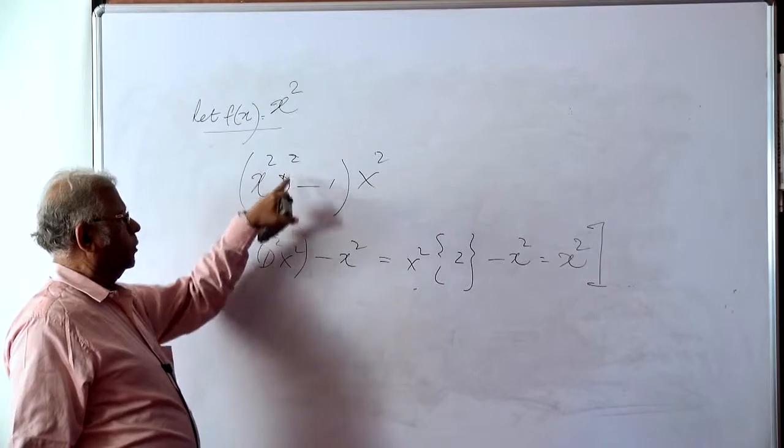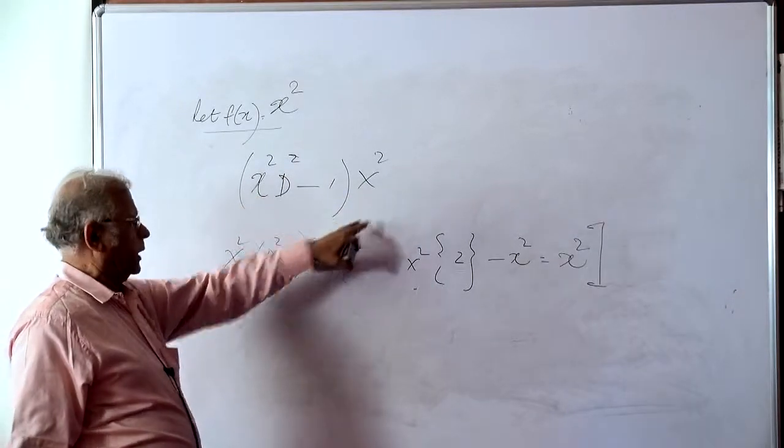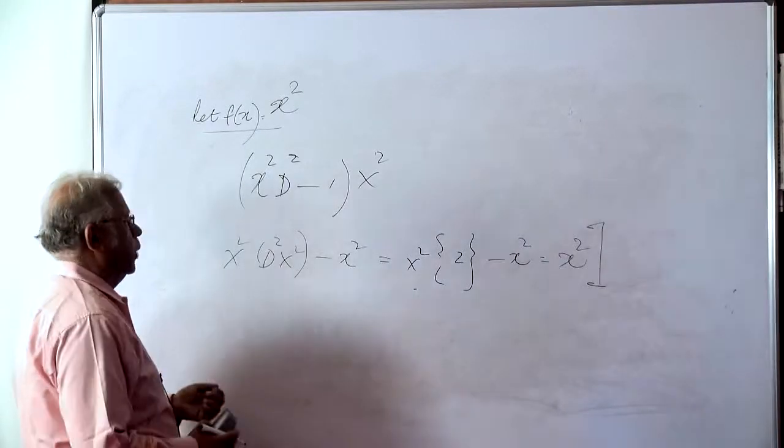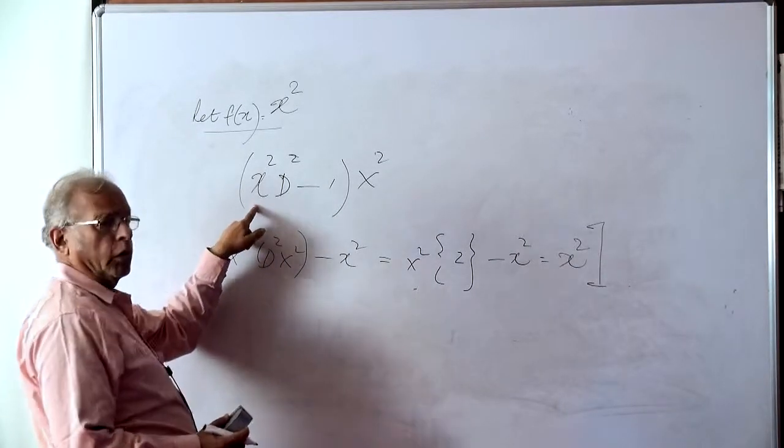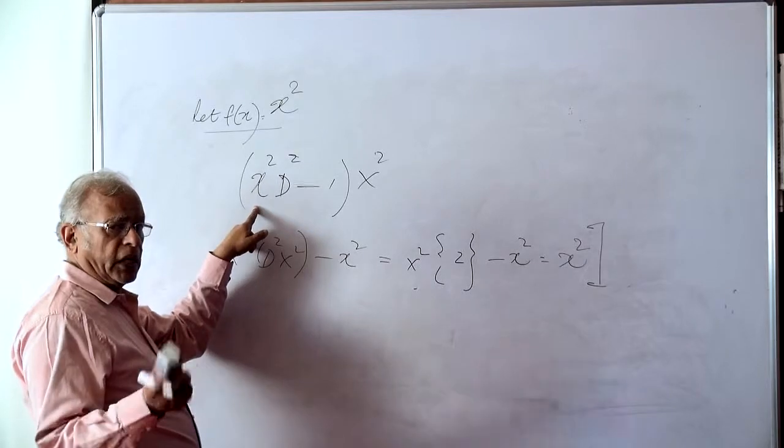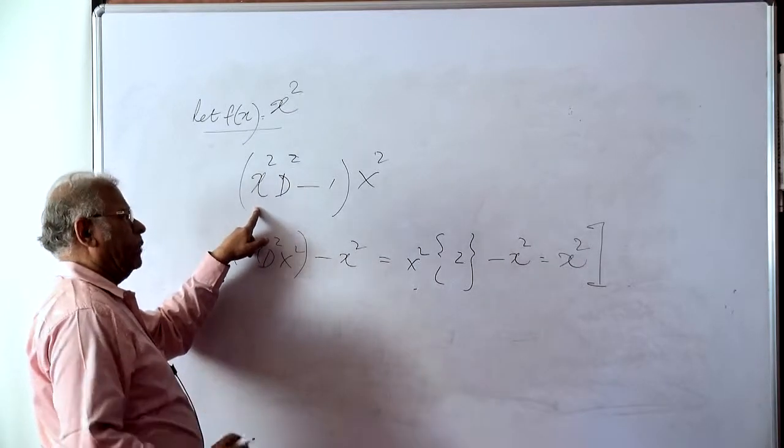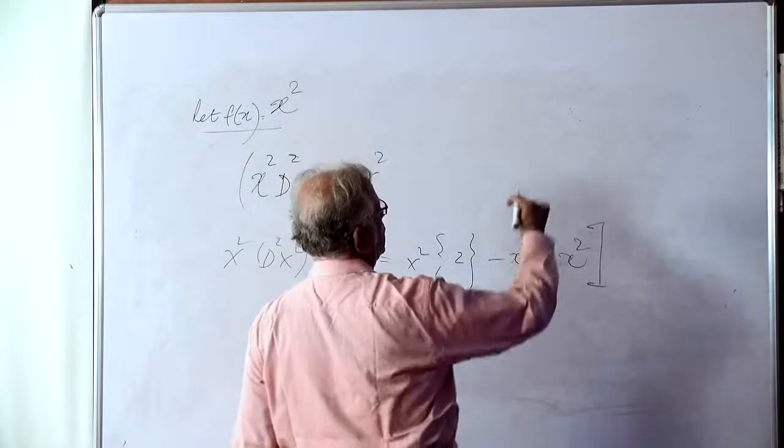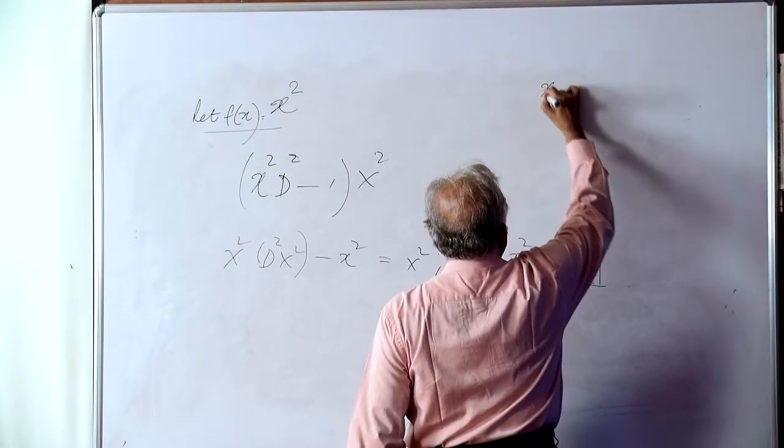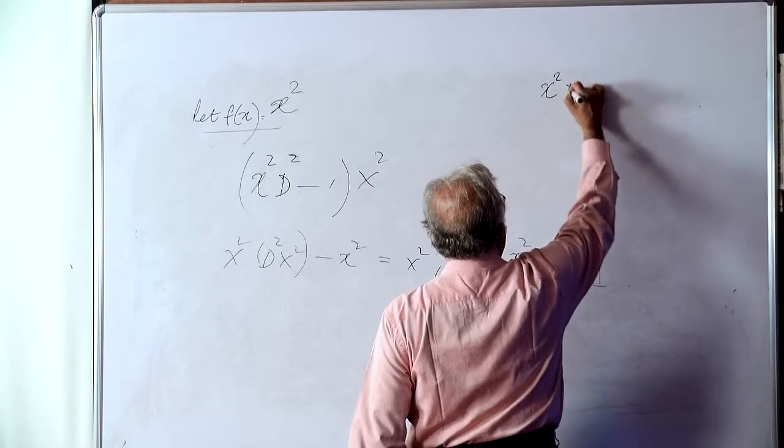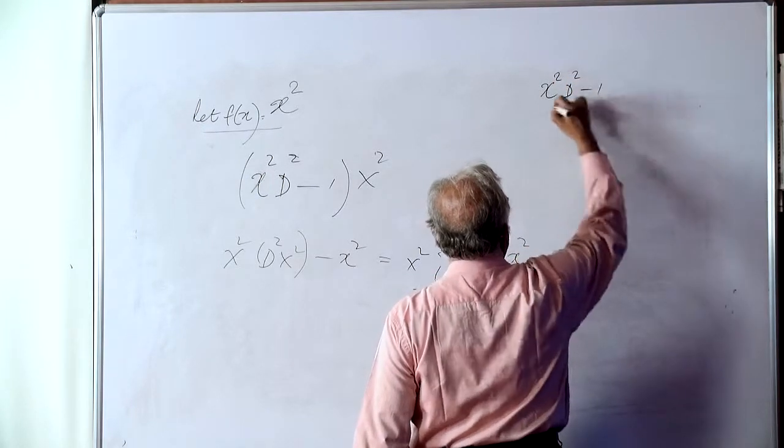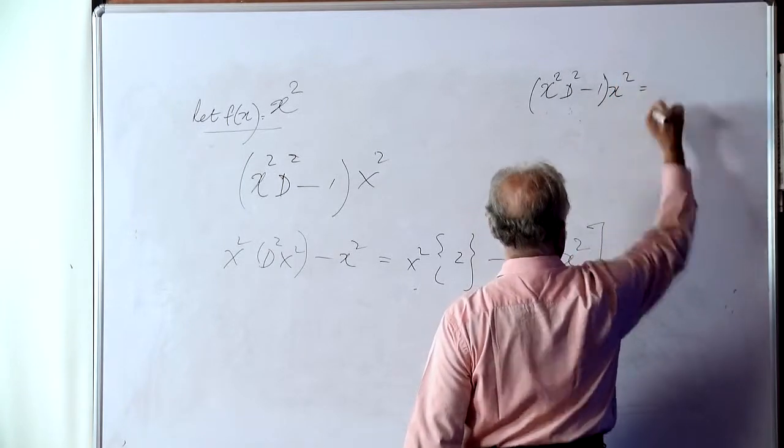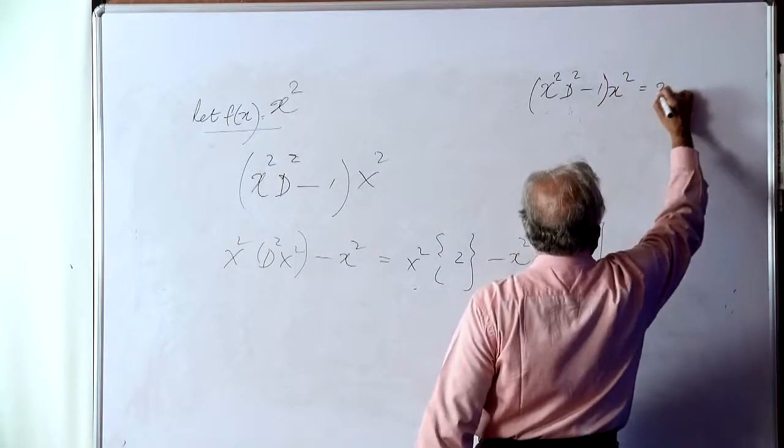x squared d² minus 1 operating on x squared can be interpreted like this. Now, let us try and see whether we can split this into two factors xd minus 1 and xd plus 1. Let us examine. So remember, we will capture these results. x squared d² minus 1 operating on x squared leads us to a value of x squared.